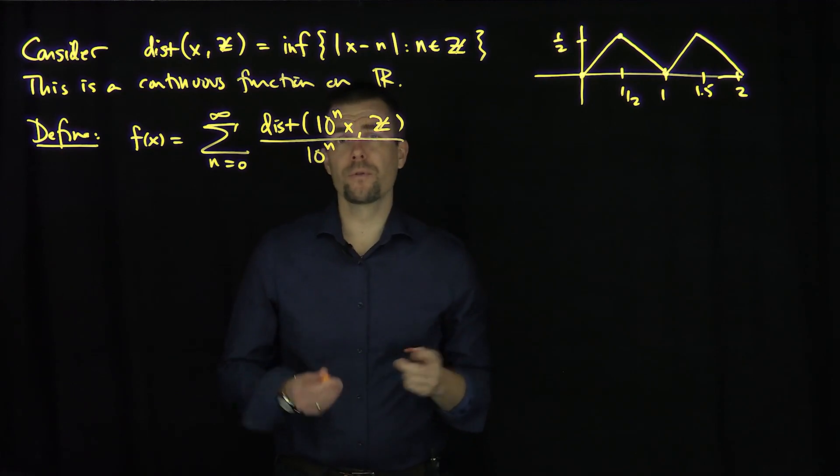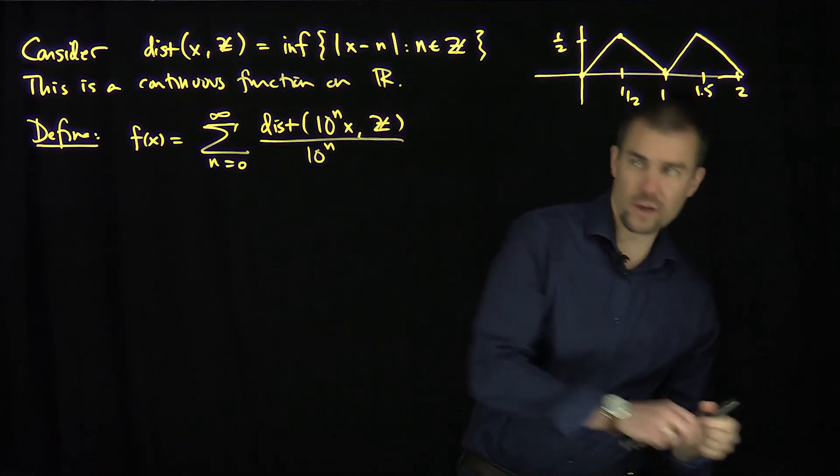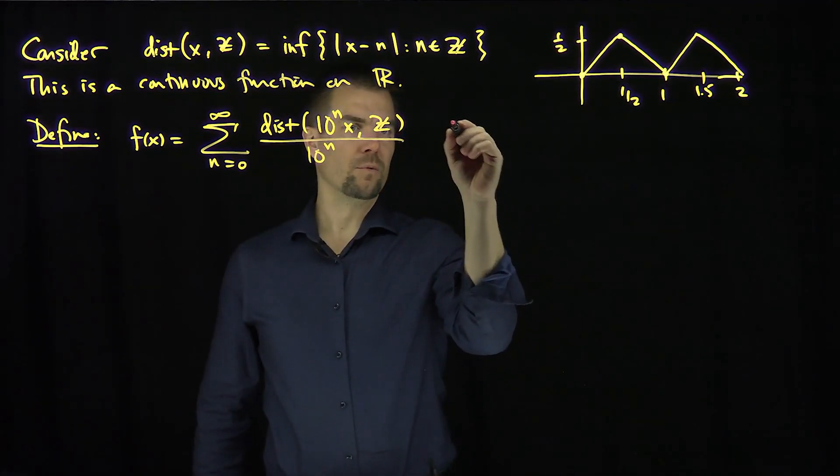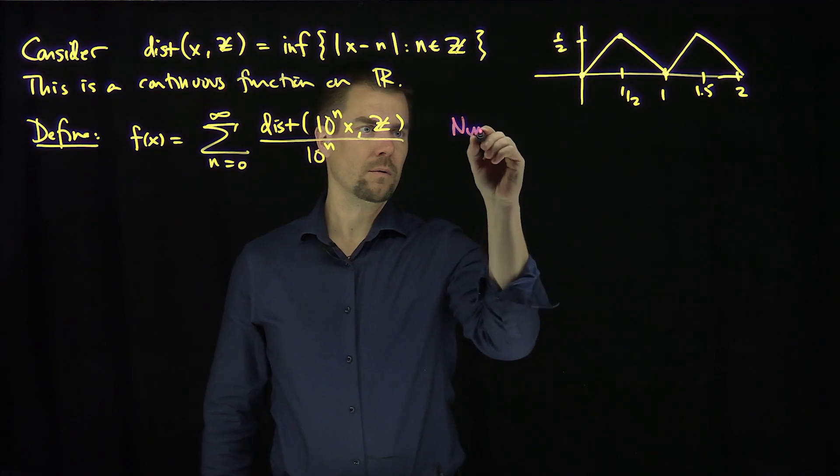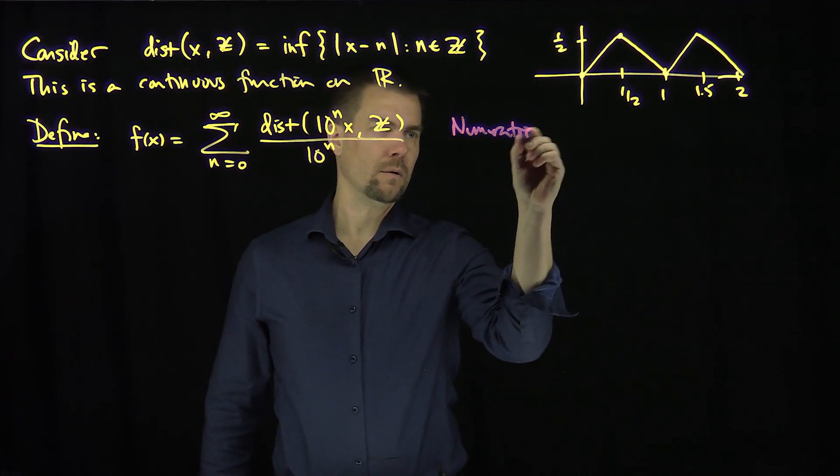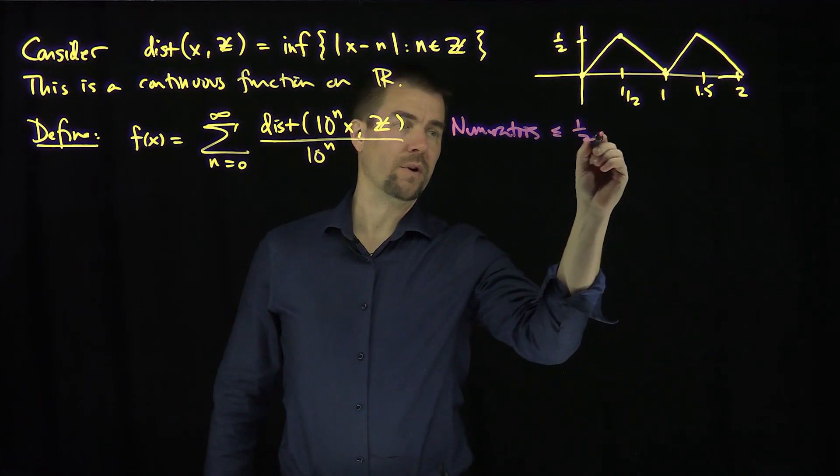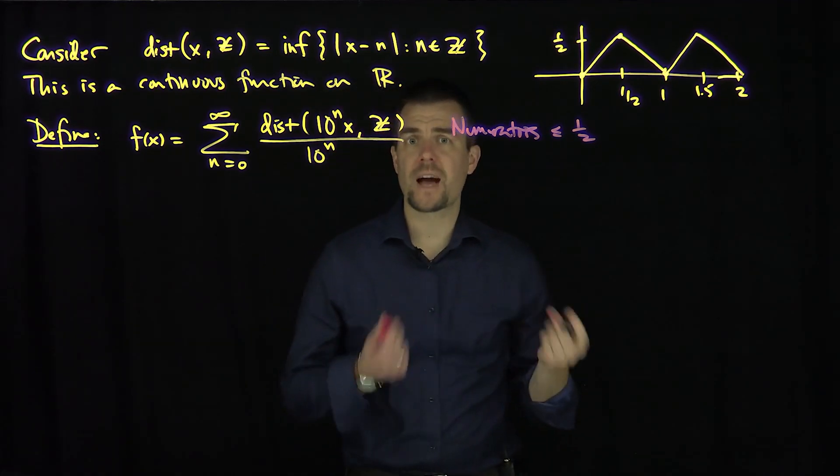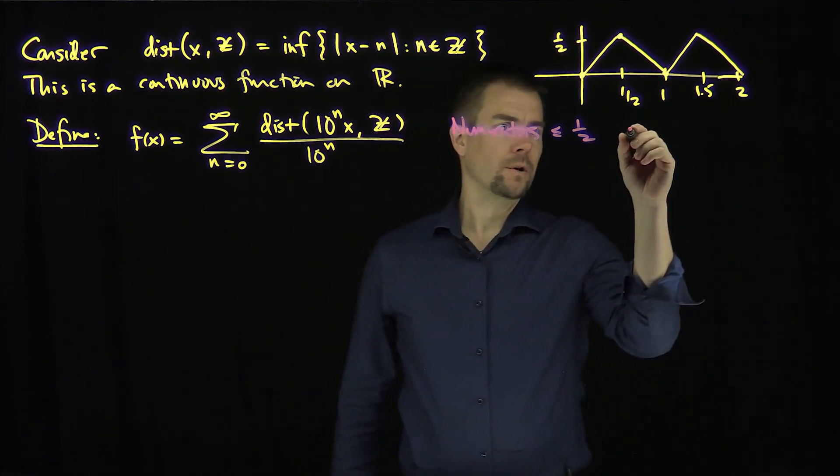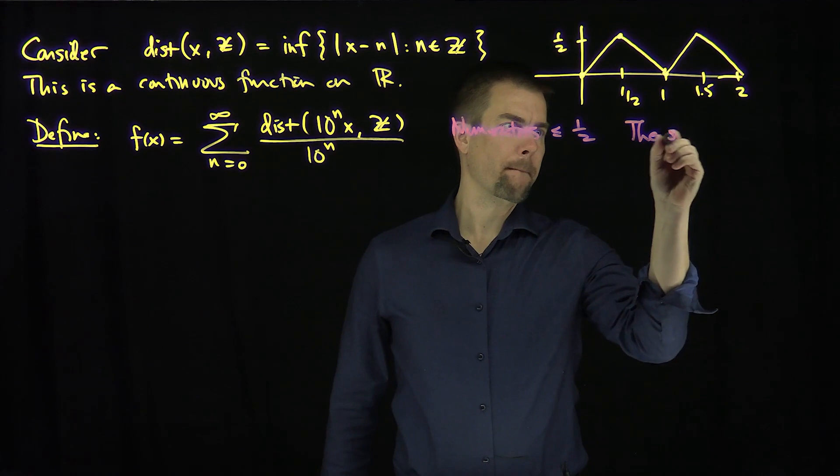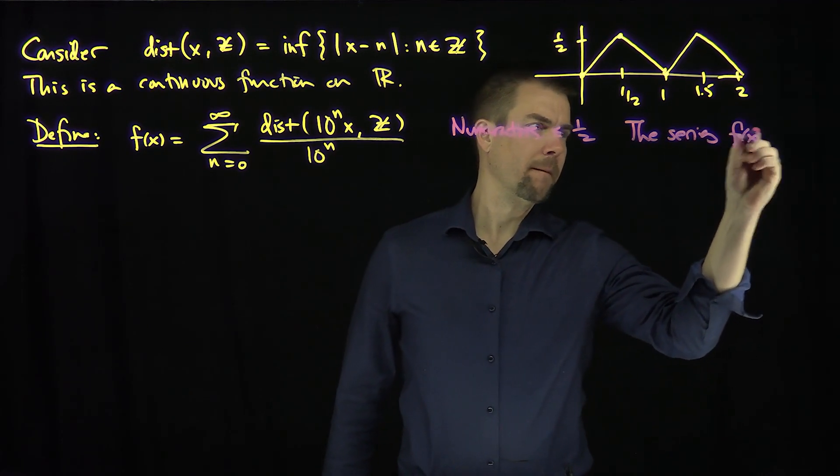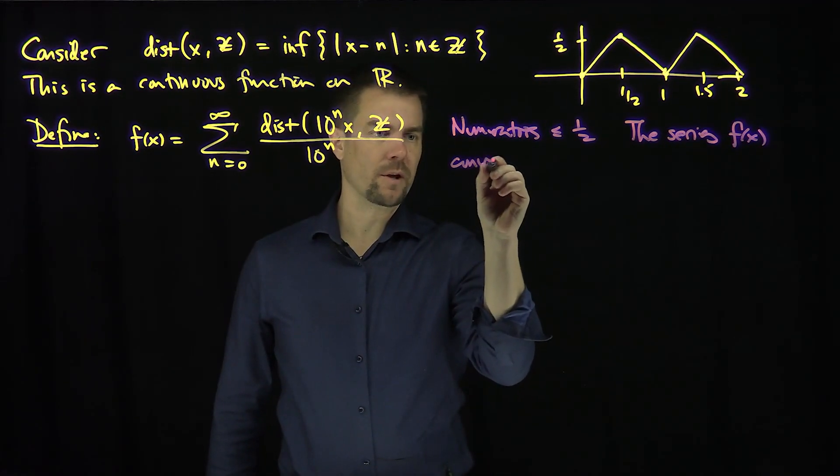Now notice that all the numerators, each numerator over here, the numerators are always less than or equal to one half. And so this series converges absolutely and uniformly.